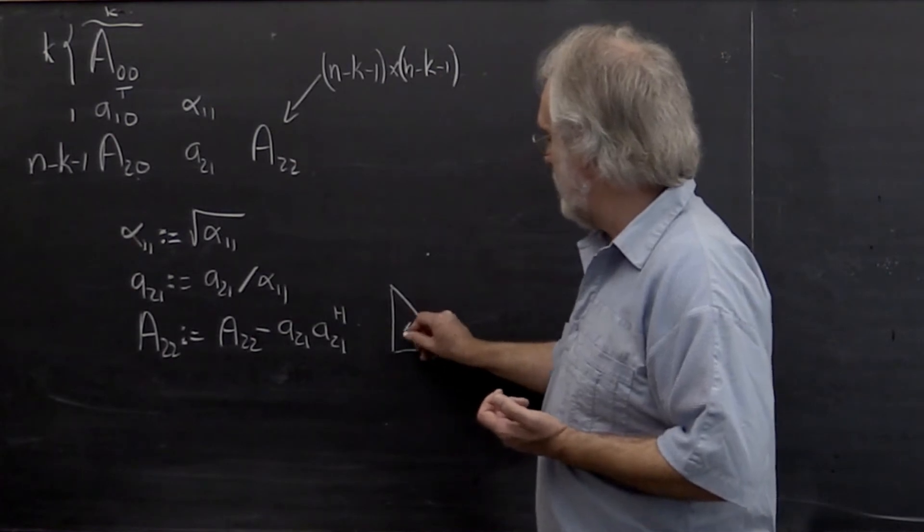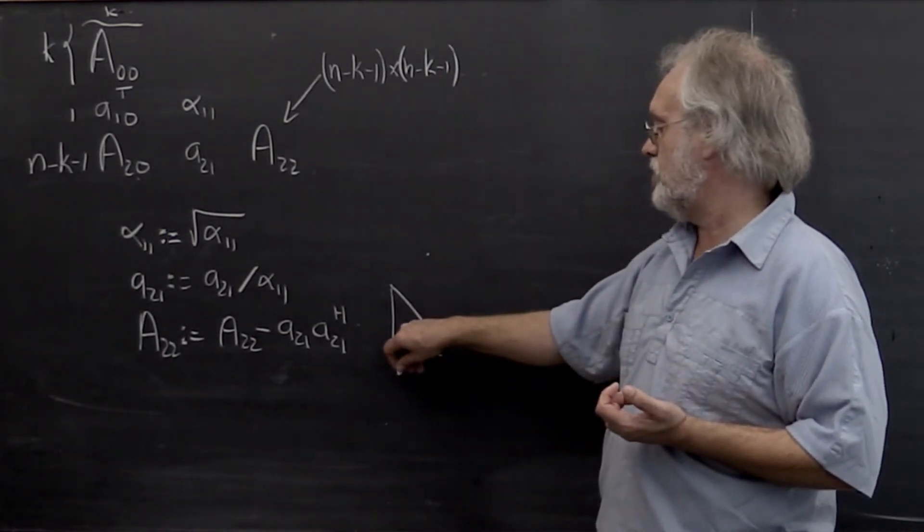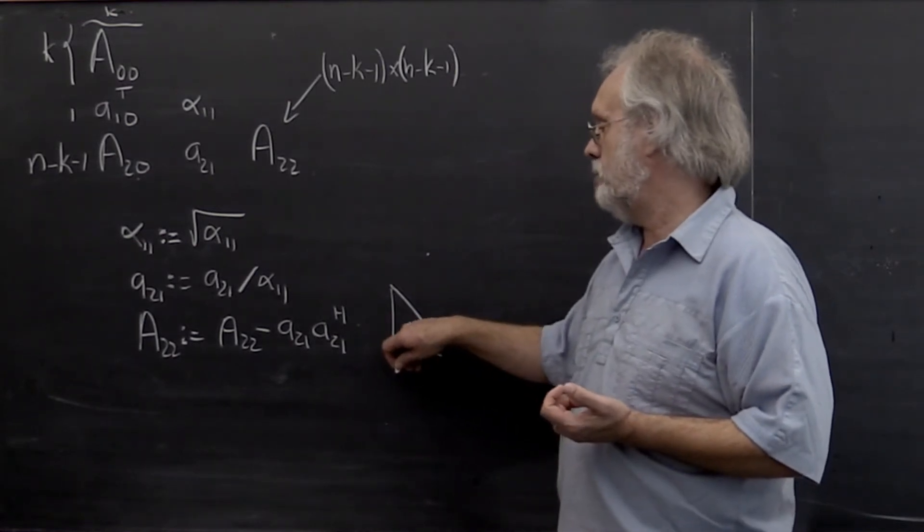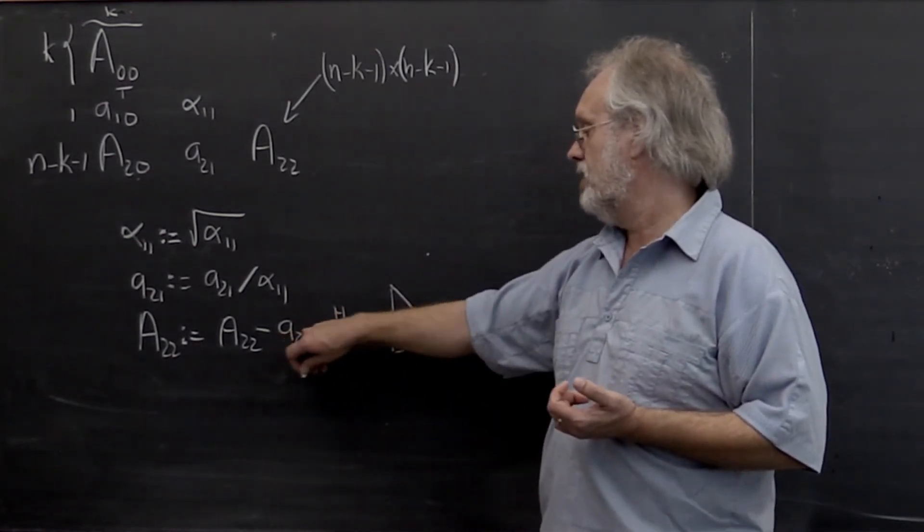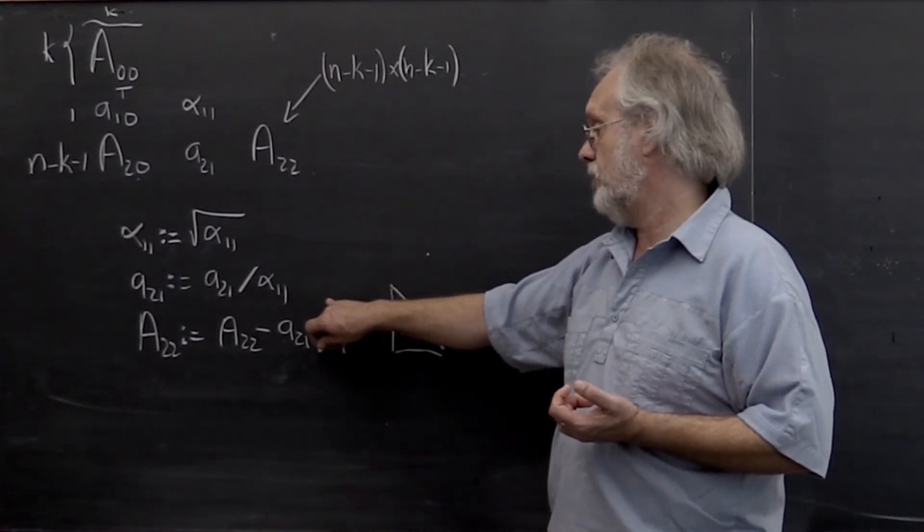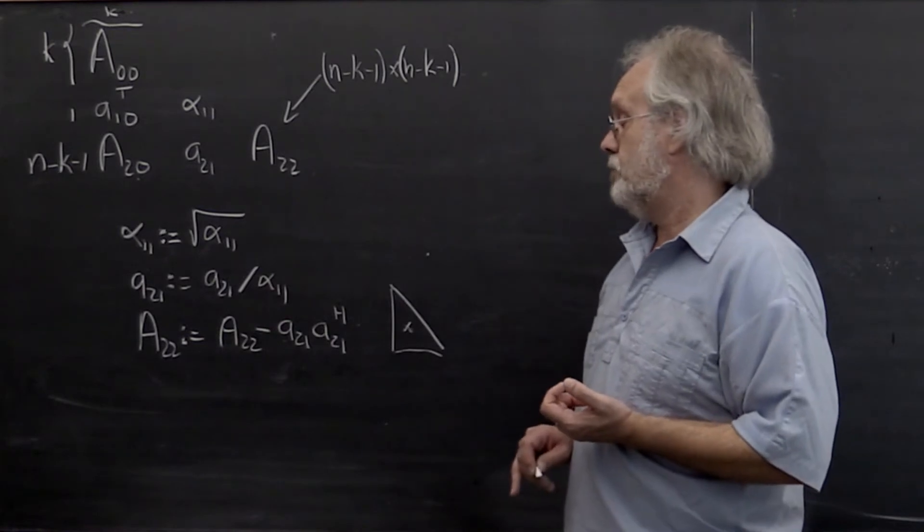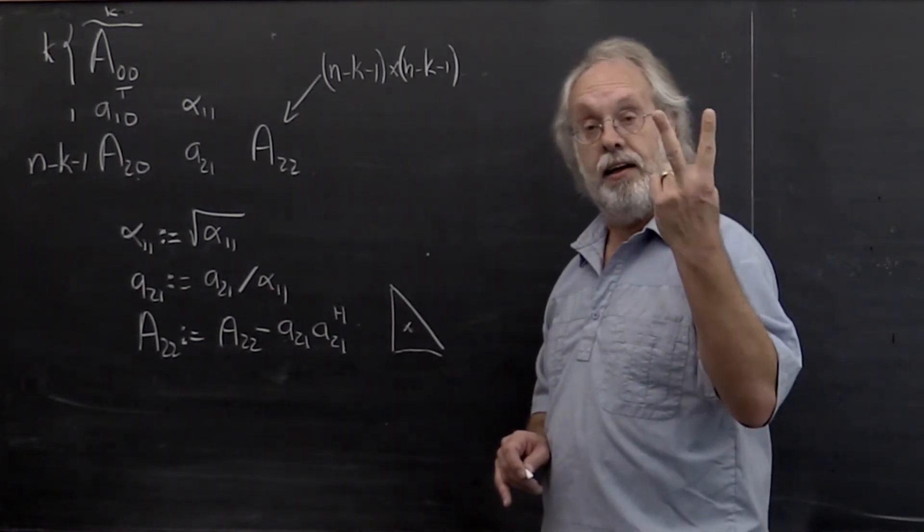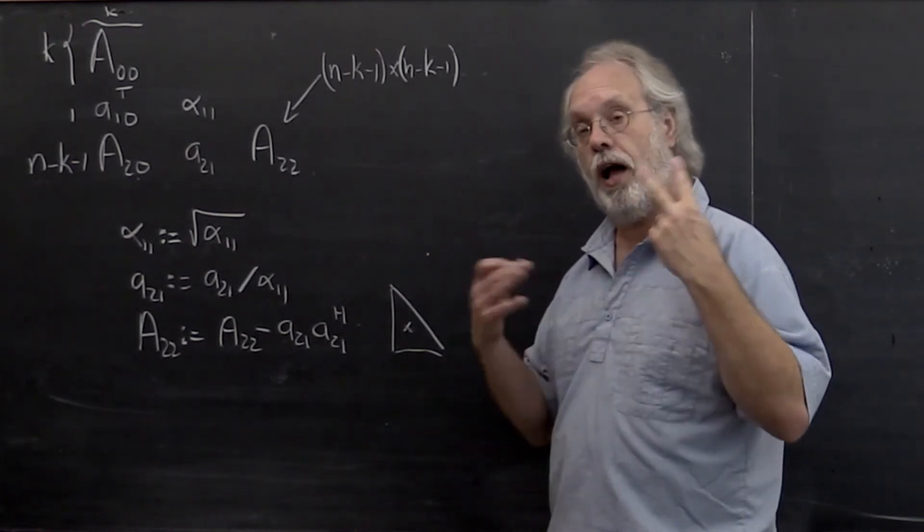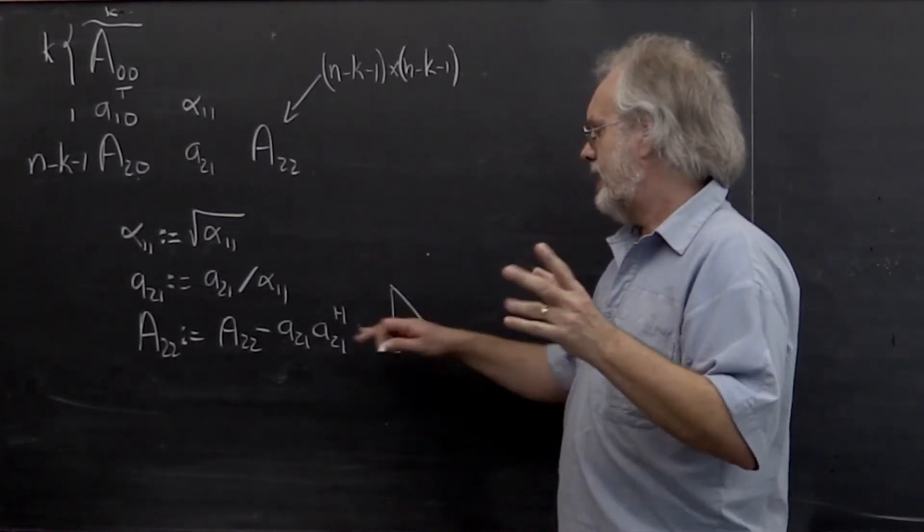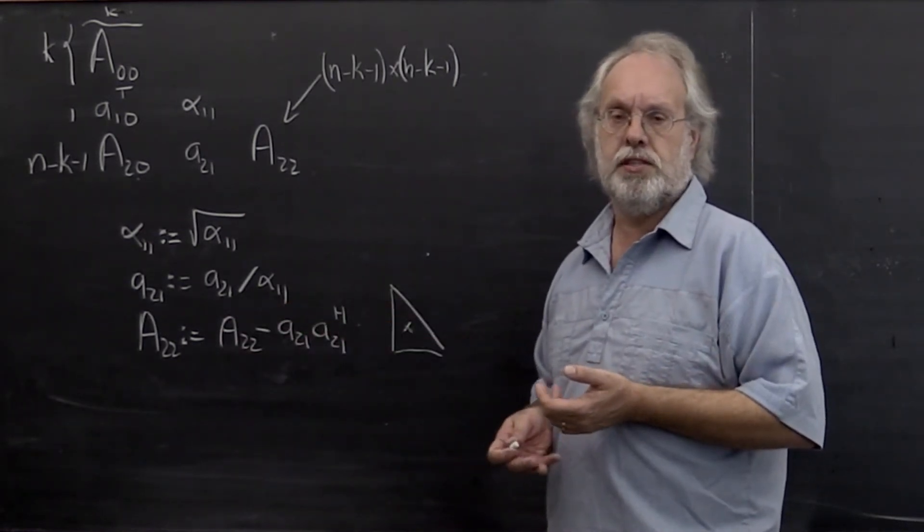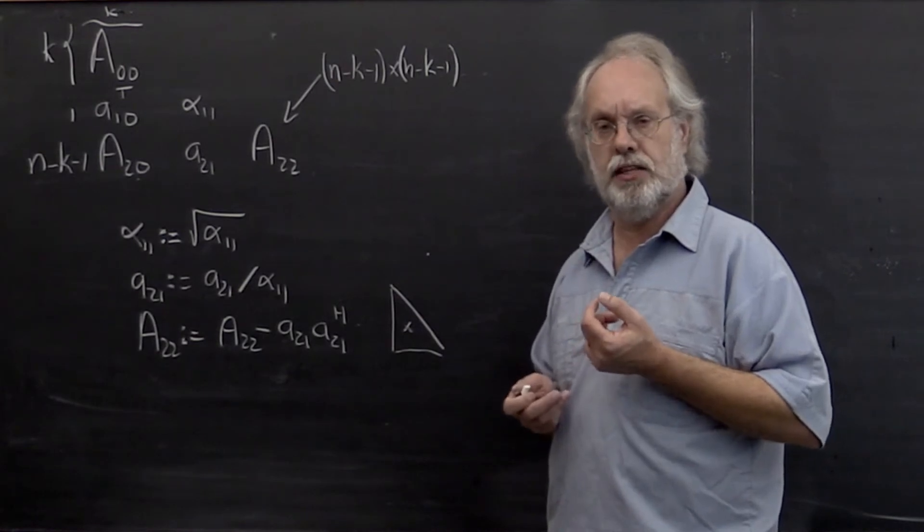Now if we take any one entry here and we ask ourselves the question, how is that entry updated? Notice that the entry is updated by multiplying the appropriate entry of A2 1 times the appropriate entry of A2 1 Hermitian transpose and then subtracting that off of A2 2. So that takes a multiply and a subtract. That's two floating-point operations. We're just going to count that as 2 and not get into the argument whether if these were complex-valued matrices, how exactly we should count that.